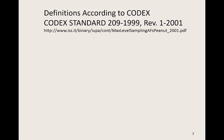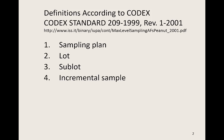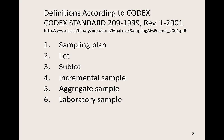Let's look at some of the definitions of terms considered in representative sampling. These definitions can be found at the Codex website and in the appendix at the end of this slide set. First of all, what is a sampling plan? How do you define a lot? Do you need to define sub-lots? What is an incremental sample? What is an aggregate sample? What is a laboratory sample? And what is a test portion?